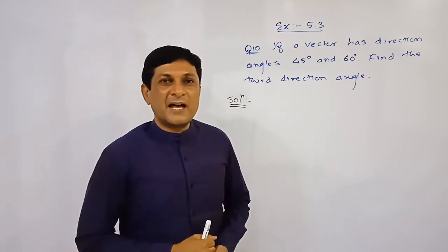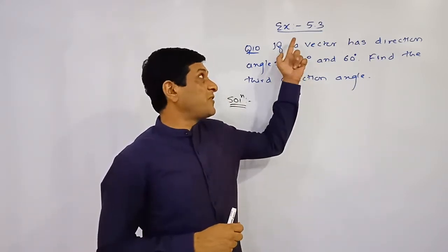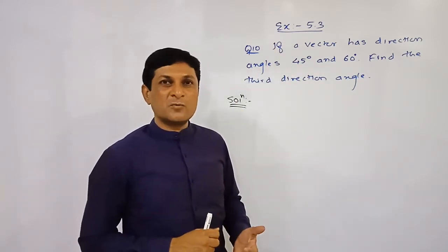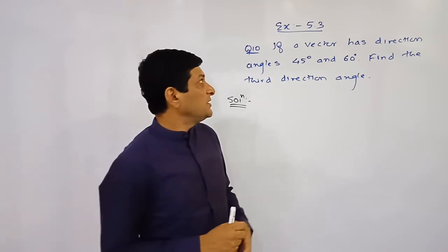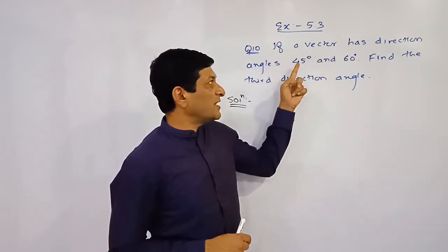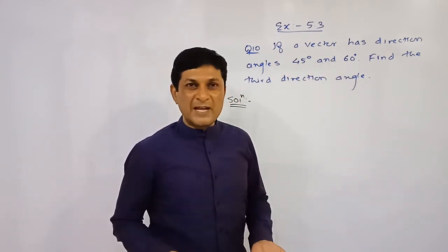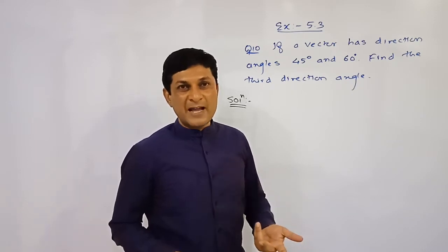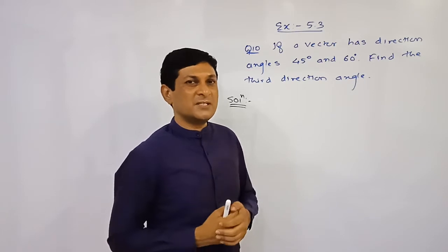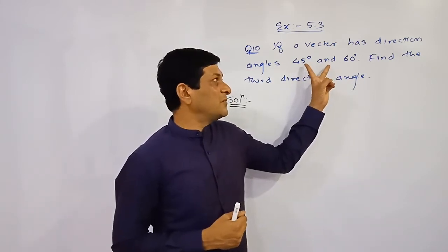Hello friends, in the last three videos we solved the first nine examples from exercise 5.3. Now we are starting example number 10. Here it is given that a vector has direction angles 45 degrees and 60 degrees — find the third direction angle. Direction angles are the angles made by a vector with the positive direction of the x, y, and z axes, generally denoted by alpha, beta, and gamma.